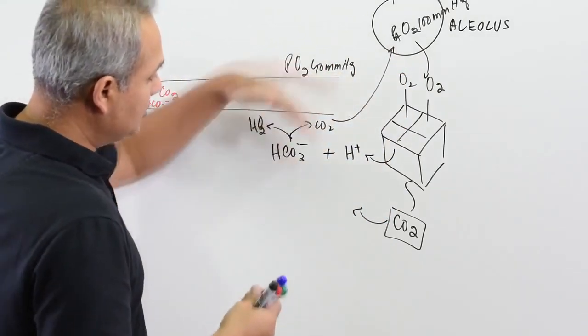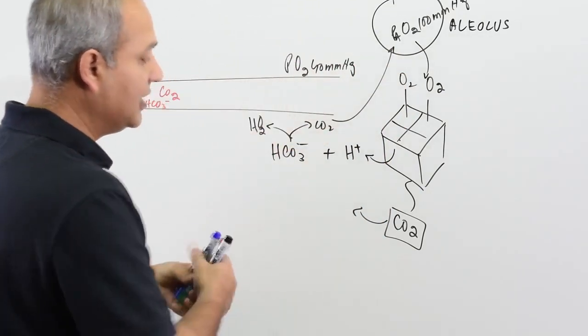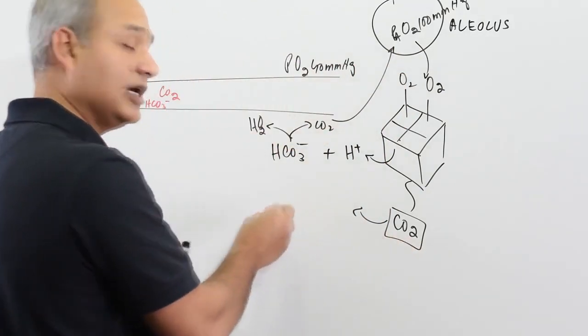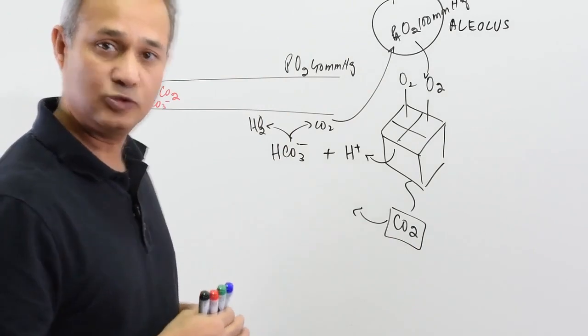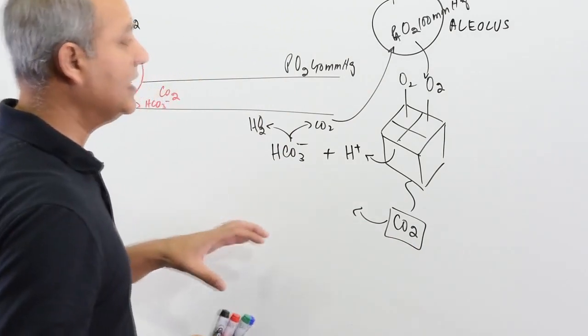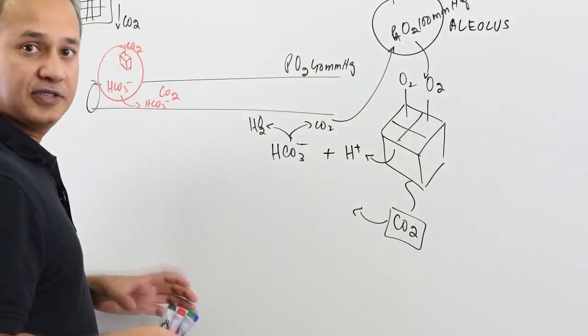When the carbon dioxide is removed, of course the pressure reduces further, and that causes the carbon dioxide to be removed from the hemoglobin as well. This is the Haldane effect.